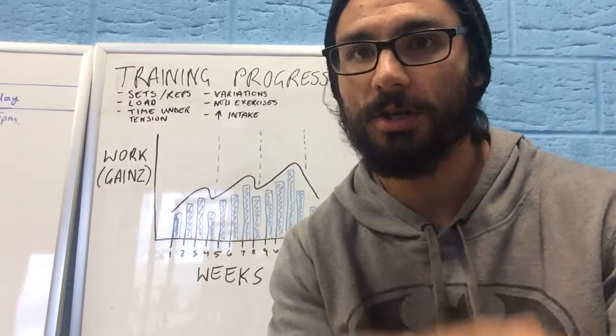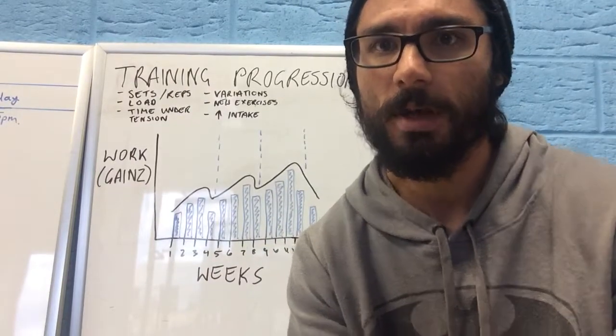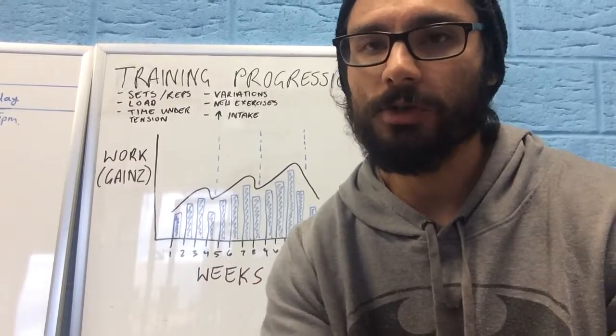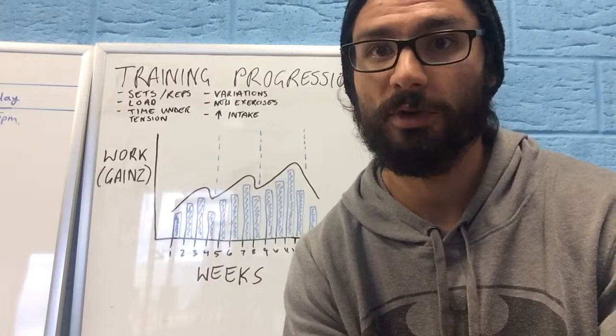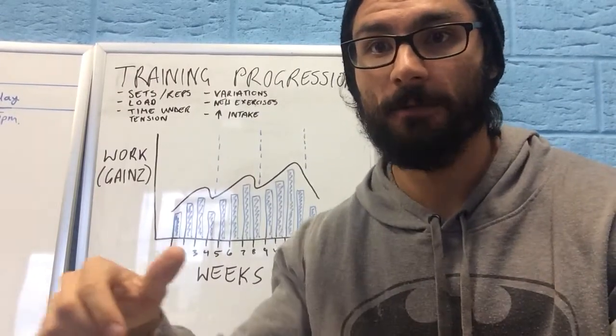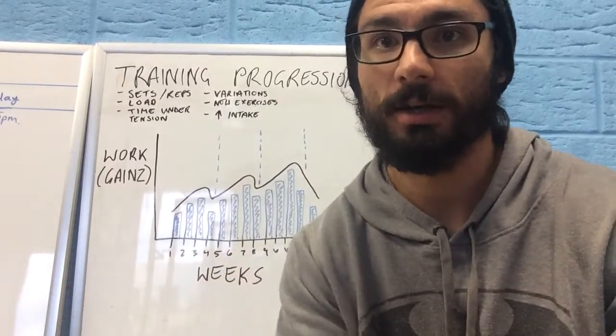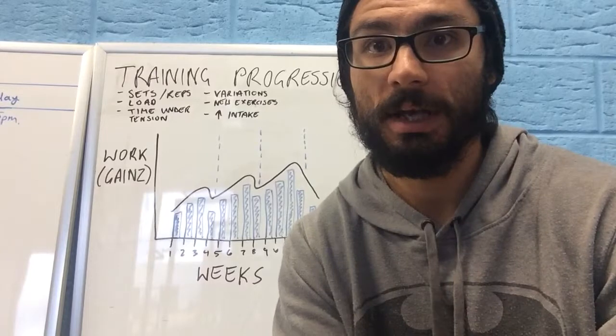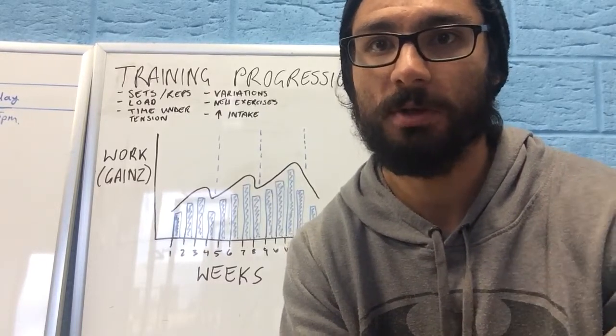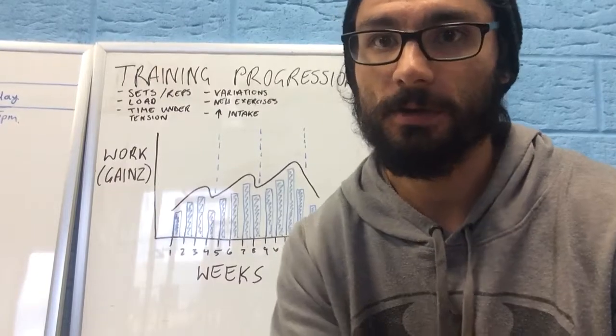Then we've got time under tension. This one's probably super underestimated for muscle growth. When we talk about time under tension, we're talking about the actual speed of the repetitions. For muscle growth, it's really important to control all reps. You can manipulate things like how fast you lower the bar in a bench press or other movements. That lowering phase actually causes quite a bit of muscle damage if you do it at constant tension.